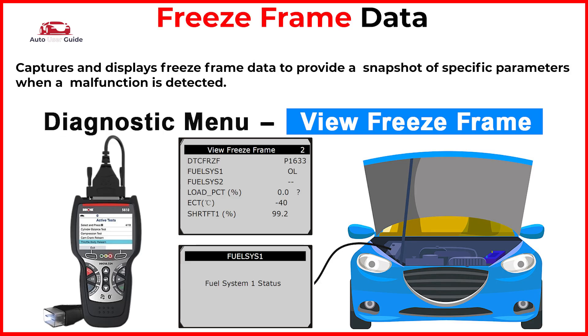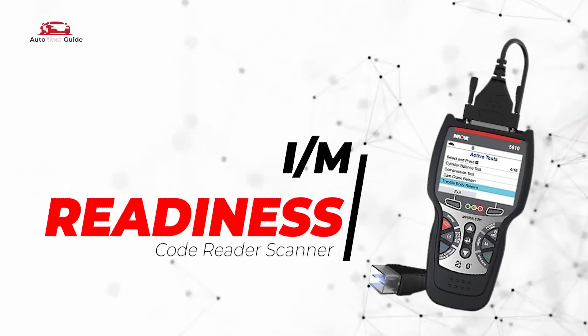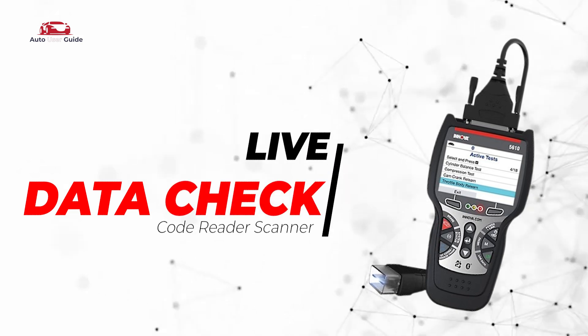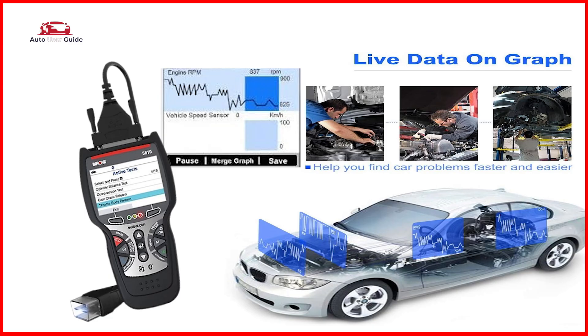Freeze frame data: captures and displays freeze frame data to provide a snapshot of specific parameters when a malfunction is detected. I/M readiness check: this feature lets you know if your car is ready for emissions testing, making it easier to identify issues that may affect your vehicle's emissions levels.